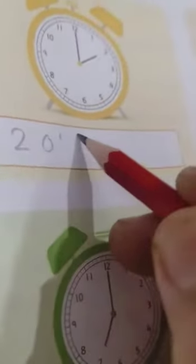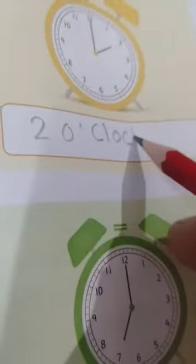So, we will write the time here in the box. 2, o, clock. 2 o'clock. Good.